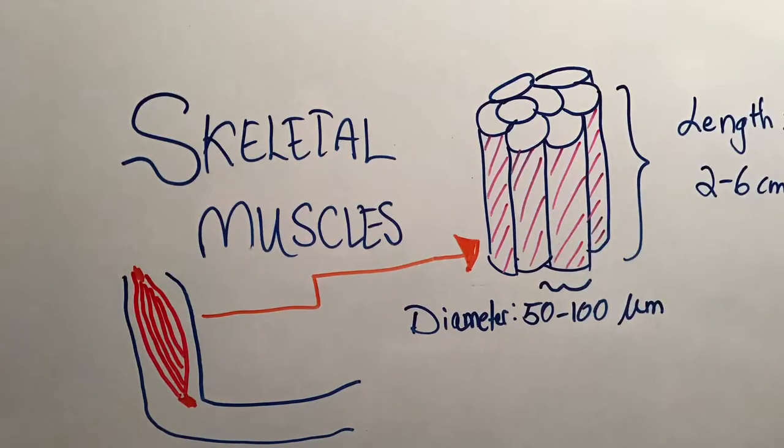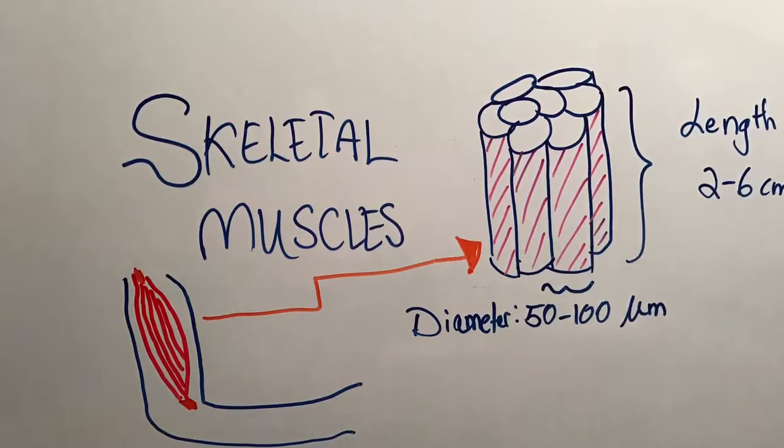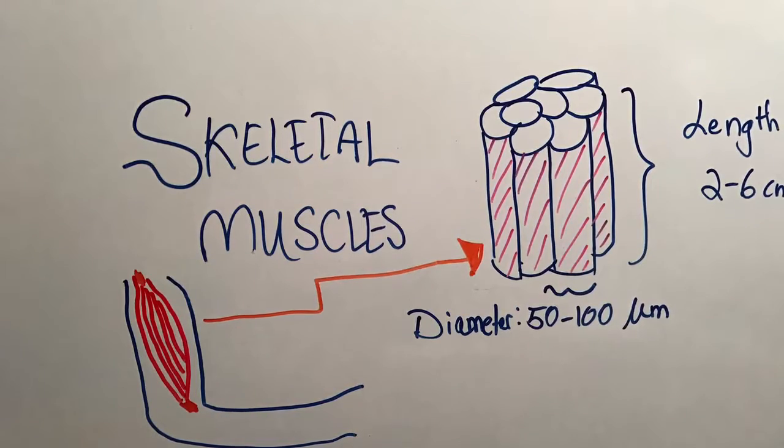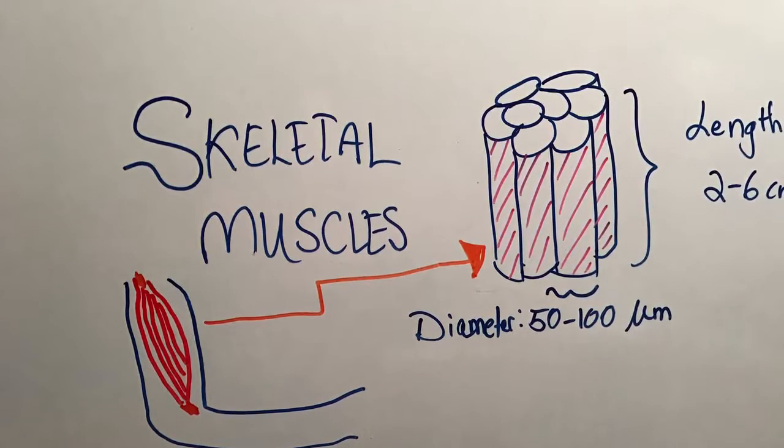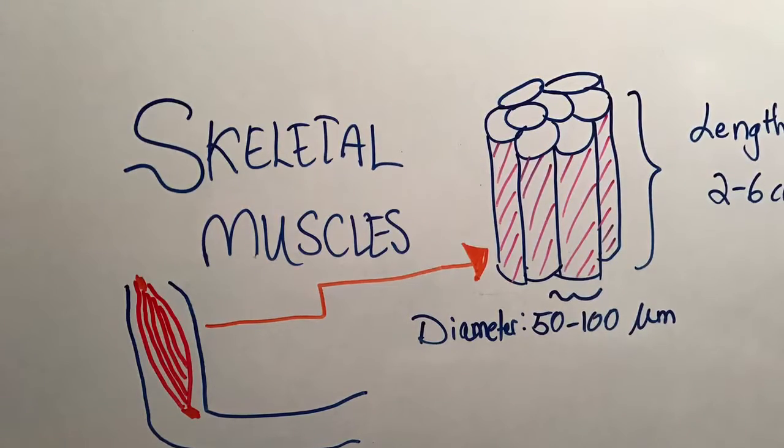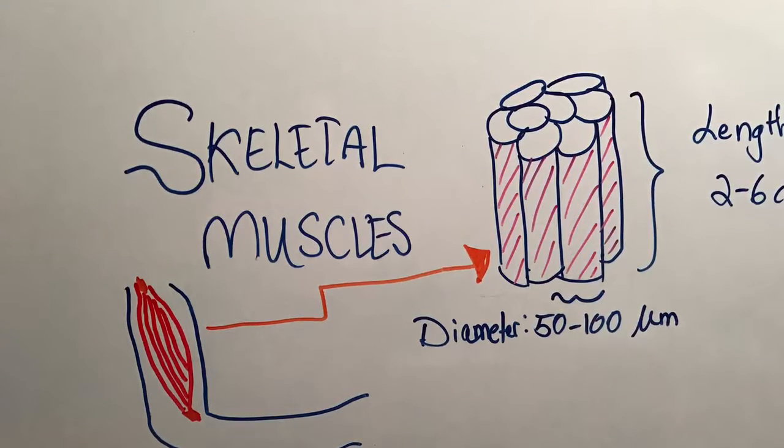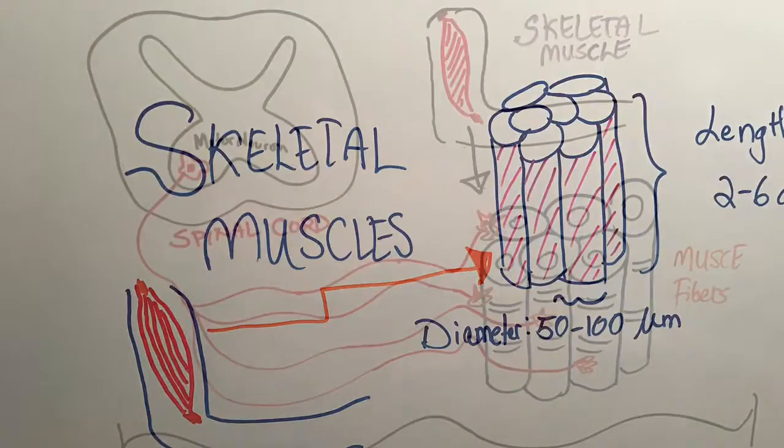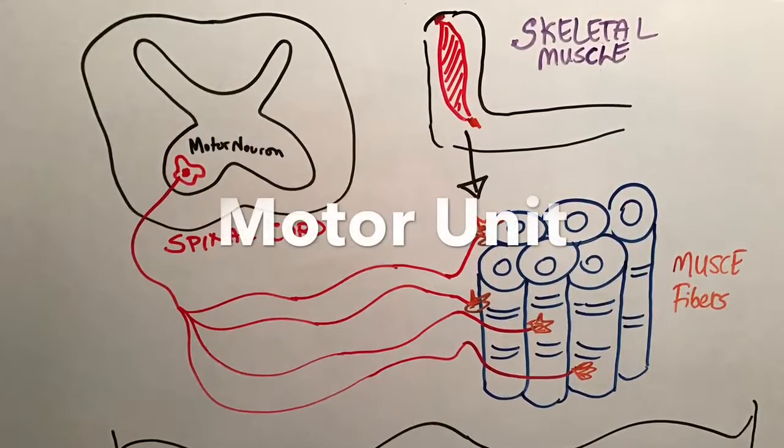The skeletal muscle is composed of bundles of contractile elements called muscle fibers. Each fiber is of length 2 to 6 centimeters and with a typical diameter in the range of 50 to 100 micrometers.